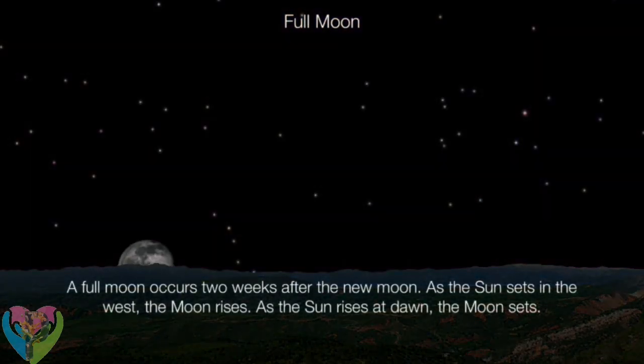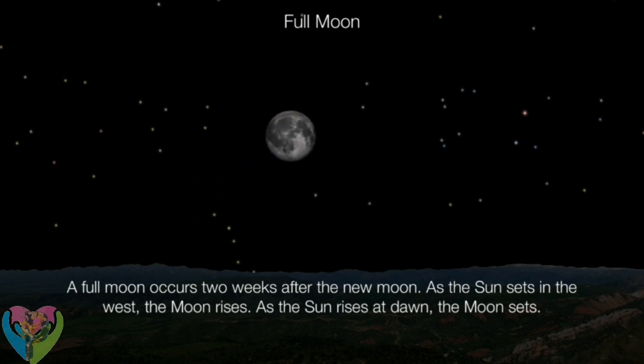A full Moon occurs two weeks after the new Moon. As the Sun sets in the west, the Moon rises. As the Sun rises at dawn, the Moon sets.